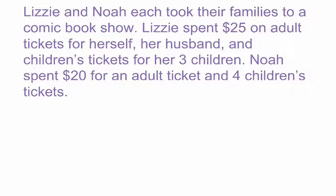We have Lizzie's set of information — we know she spent $25 on some tickets. We don't know how much each ticket costs, like how much are adult tickets, how much are children's tickets. That's what we're going to write the system to solve. Then Noah has a similar but different situation with the tickets he got. So first I'm going to write it out and get some variables, and then we can put these into two equations.